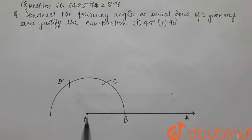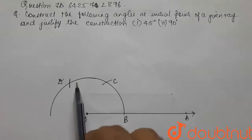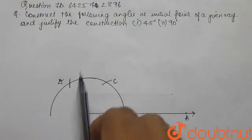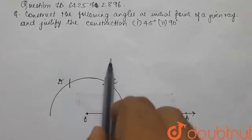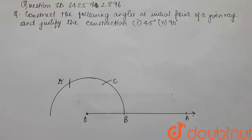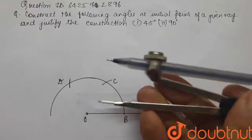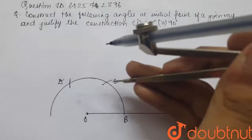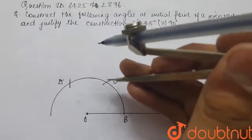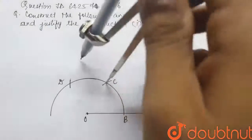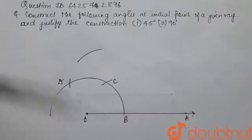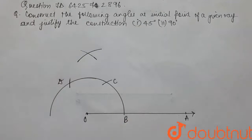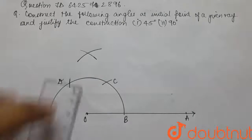So to construct an angle of 90 degrees, we will have to make a bisector of angle DOC. To do that, we again get our compass and take the same distance — we are not going to change the distance on the compass. We place the compass on C, make an arc, and again place the compass on D and make another arc.